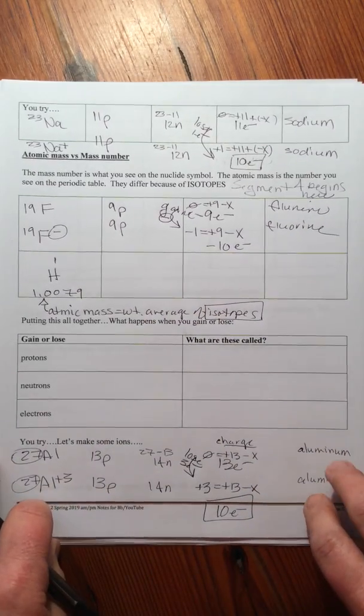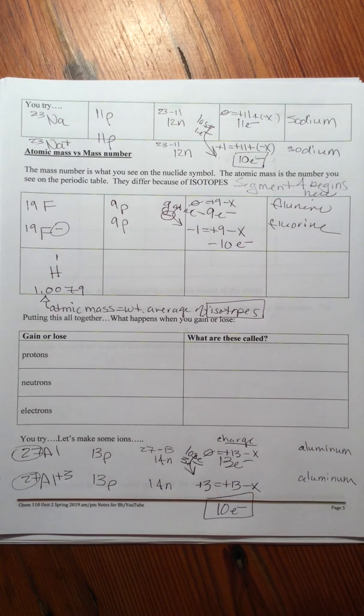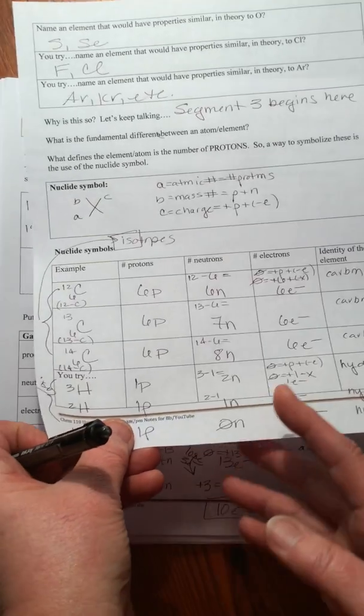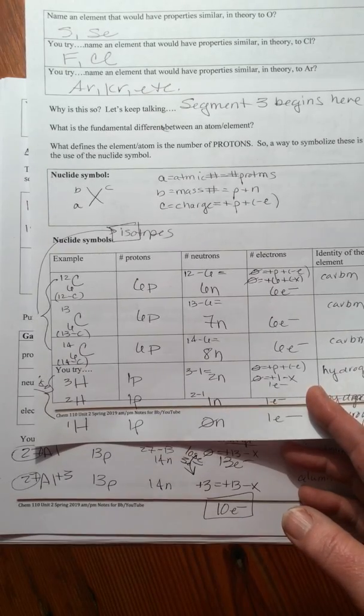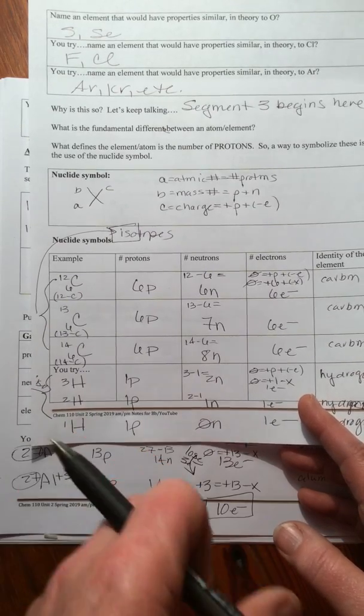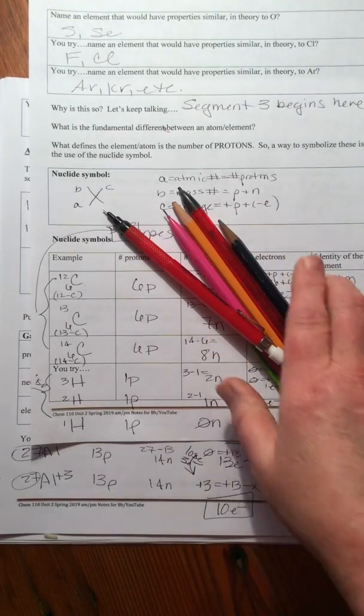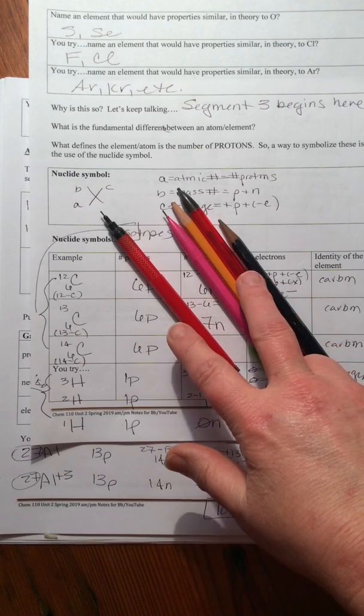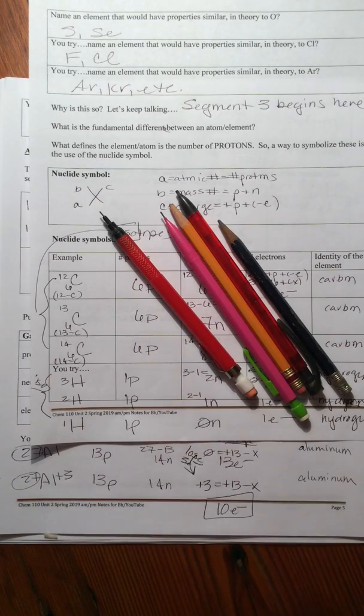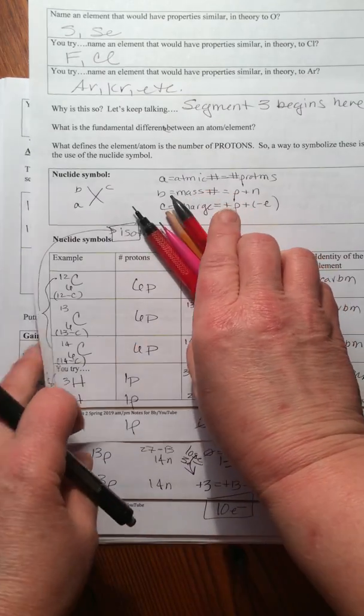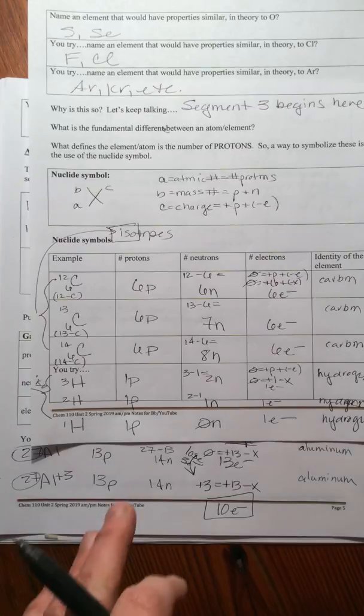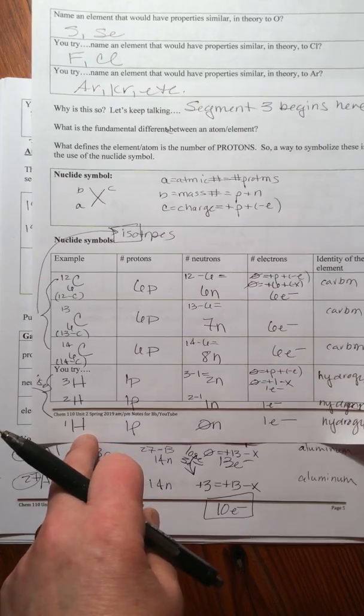Now weighted average is something that we will not do mathematically in this class, but what you need is the concept. Since the weighted average is pretty close to 1, that tells you that even though there are three isotopes of hydrogen, the most prevalent one is hydrogen 1. That one contributes most to the collection. So if I say pink or red shades, we have mostly pink or red shades in my collection here. Same idea. If what I see on the periodic table is close to 1, then that is saying that this is the most prevalent isotope.